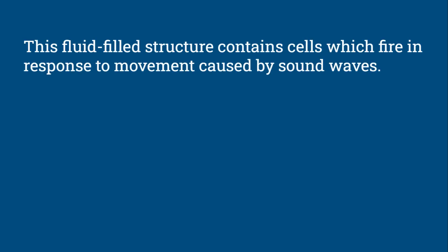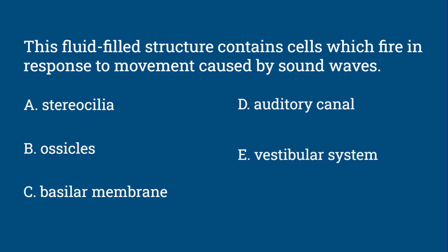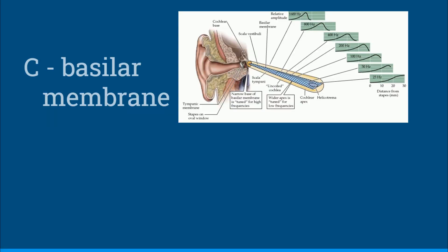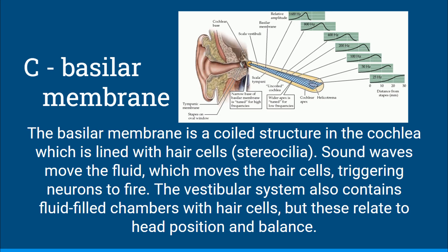This fluid-filled structure contains cells which fire in response to movement caused by sound waves. The answer is C, the basilar membrane. The basilar membrane is a coiled structure in the cochlea — shown uncoiled in the image — which is lined with hair cells, or stereocilia. Sound waves move the fluid in the basilar membrane, which moves the hair cells, and that triggers neurons to fire. The vestibular system also contains fluid-filled chambers with hair cells, but these relate to head position and balance.